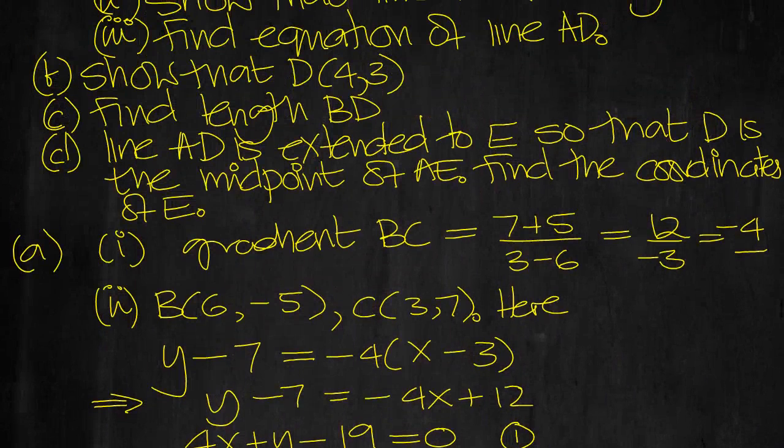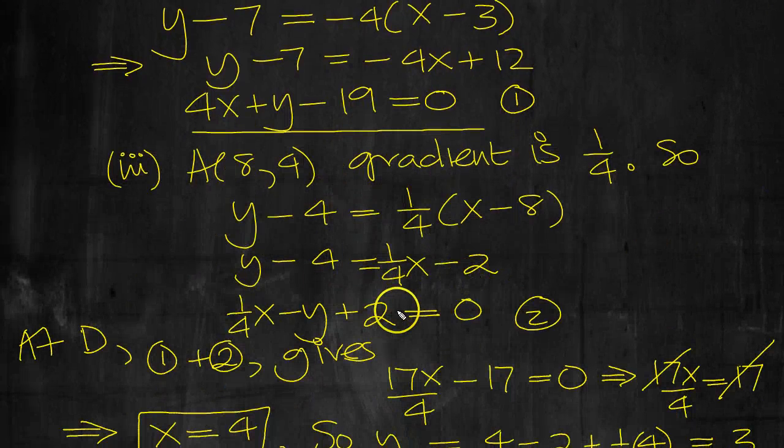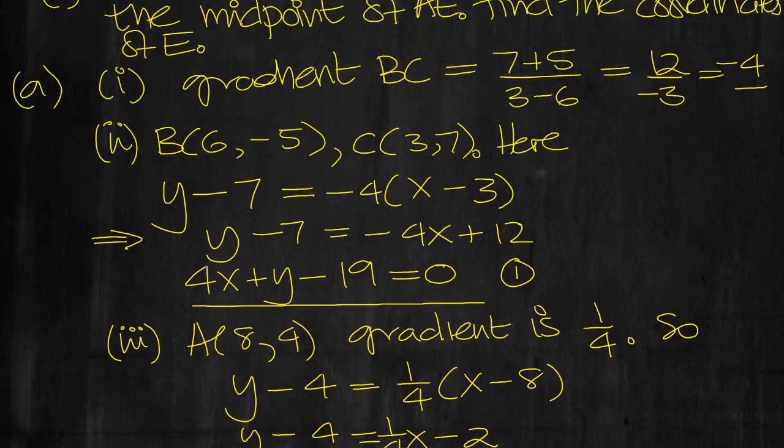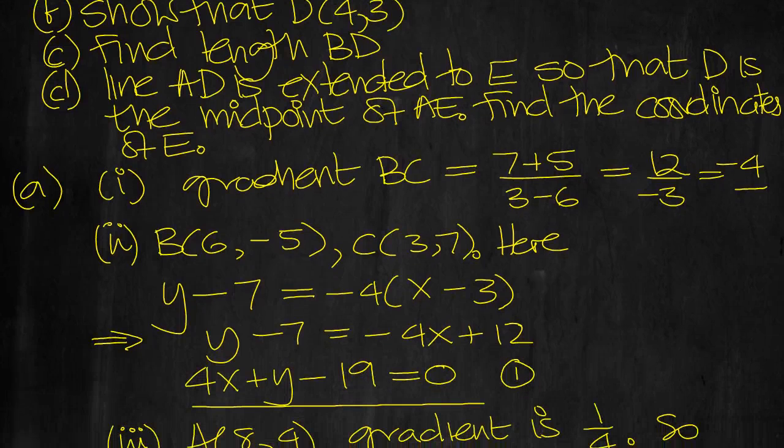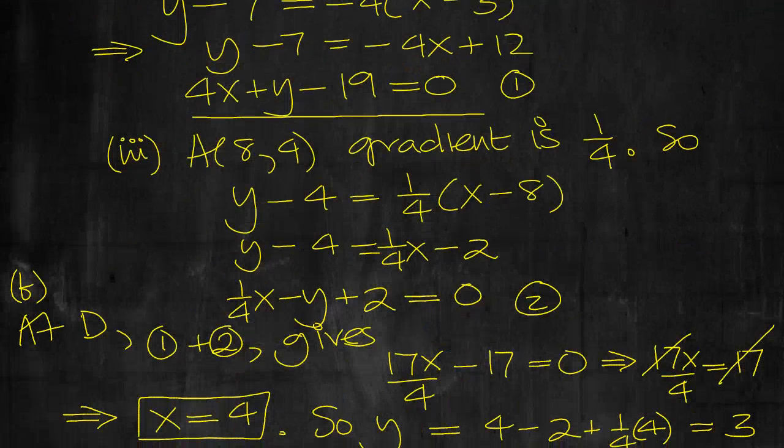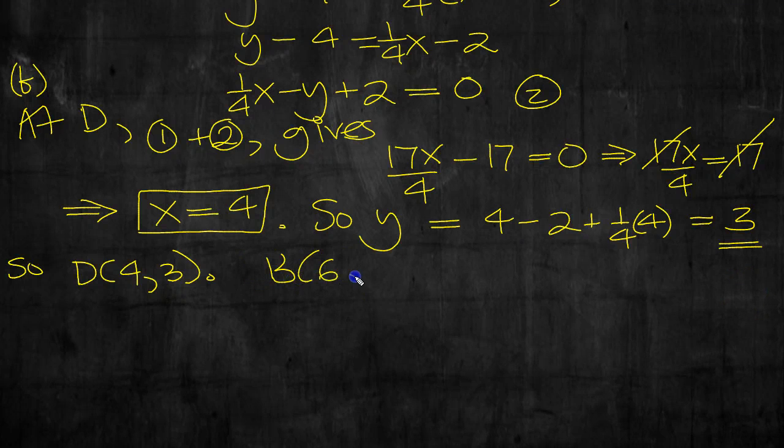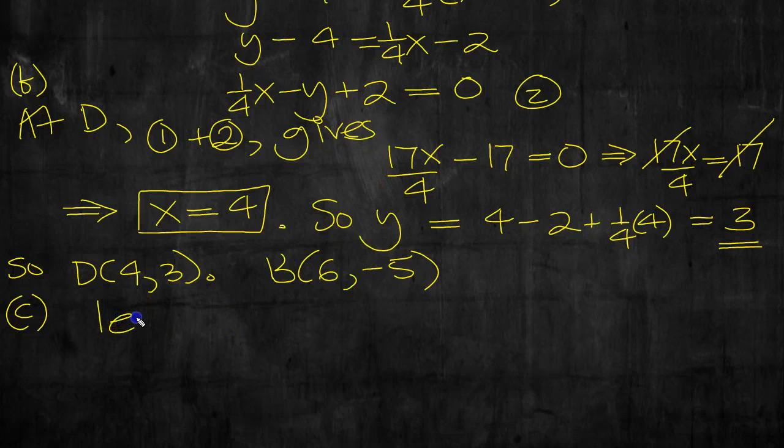So let's go back to the question now. We've found D. Find the equation of line AD, so that was part 3, and then this was part B. So I must have missed reading part 3. Okay, so part C, find the length BD.